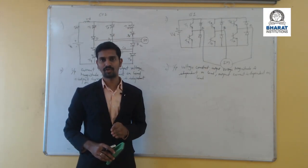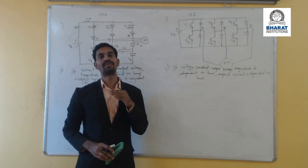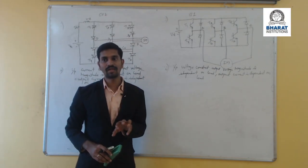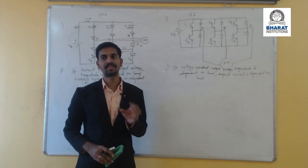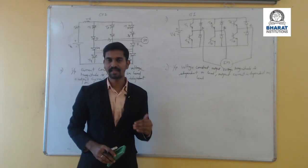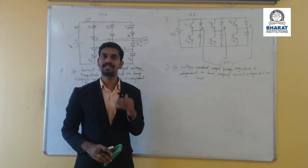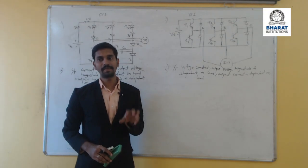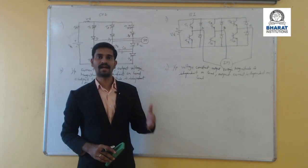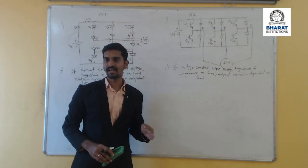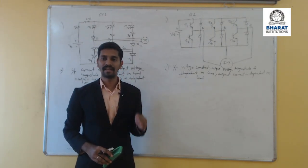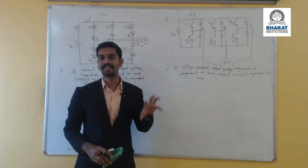With respect to the stator side control, we will vary the frequency as well as the stator voltages using voltage source inverters, current source inverters, or cycloconverters. These converters — VSI, CSI, and cycloconverters — achieve variable frequency as well as variable stator voltage, because varying the stator voltage and frequency gives us speed control of the induction motor with respect to the stator side.